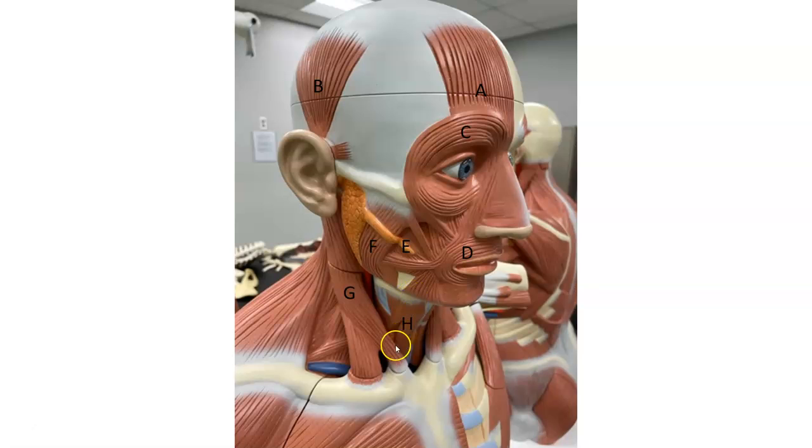And then H is showing where platysma would be if you could see the superficial muscles. This is where the platysma would be, but you can't see it on this model.